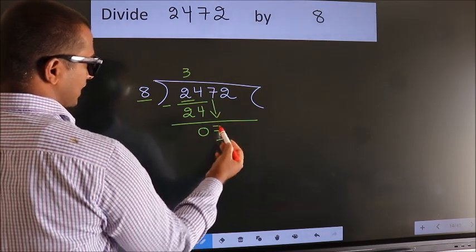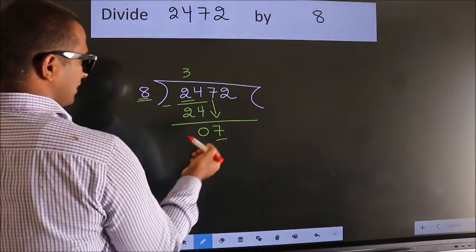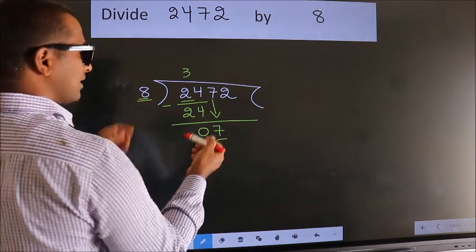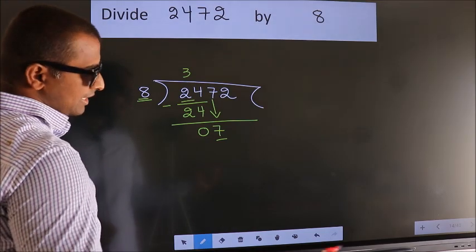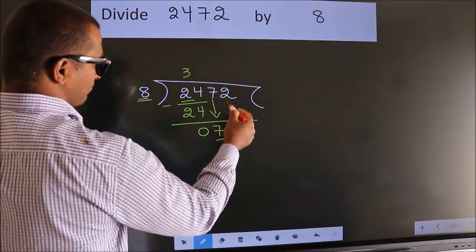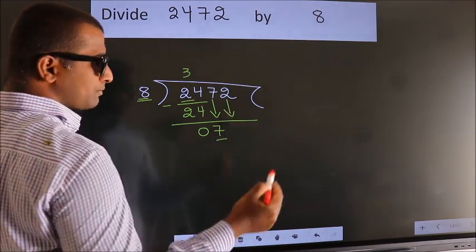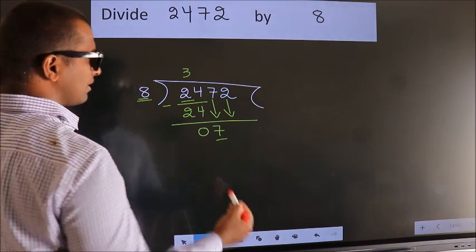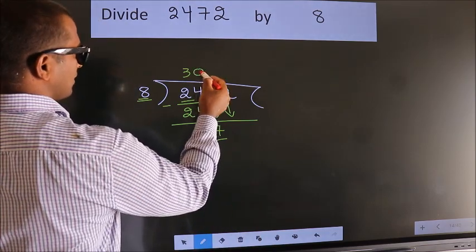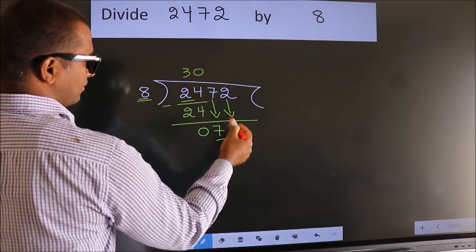Here we have 7, here 8. 7 is smaller than 8. So, we should bring down the second number. And the rule to bring down the second number is put 0 here. Then only we can bring down this number.